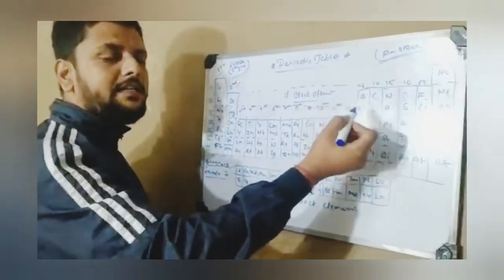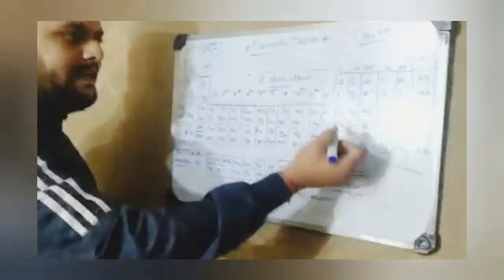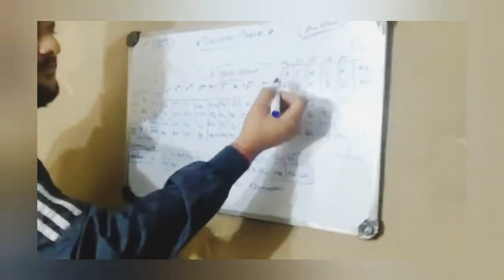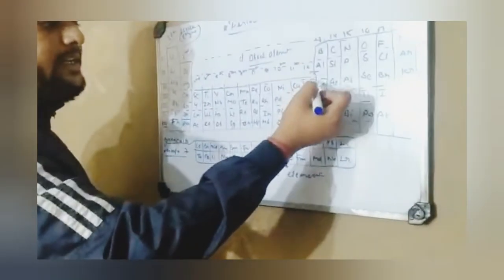Group 13 elements, we will remember the short trick: Boron, Aluminium, Gallium, Indium, Thallium.